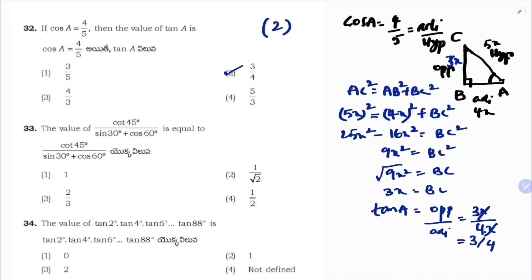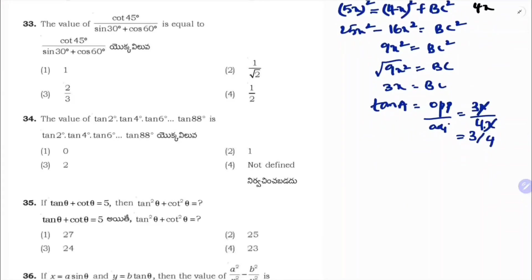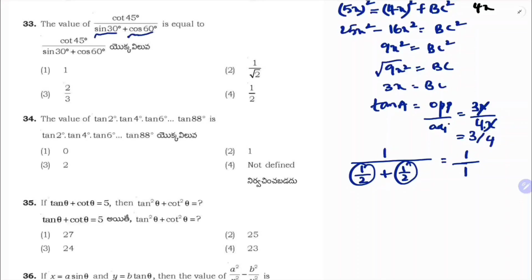The value of cot 45 + sin 30 + cos 60. From the trigonometric ratios table: cot 45 = 1, sin 30 = 1/2, cos 60 = 1/2. So 1 + 1/2 + 1/2 = 2. Wait — cot 45 + sin 30 + cos 60 = 1 + 1/2 + 1/2 = 2. Correct option is 1.